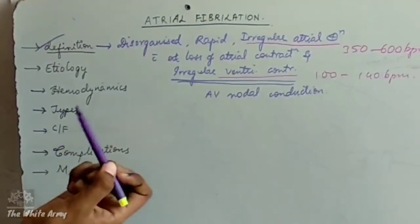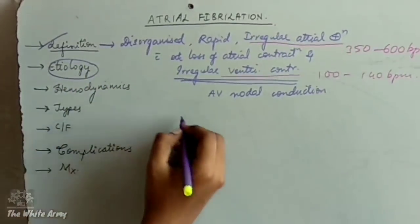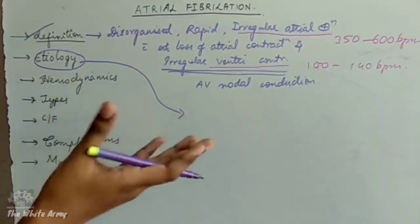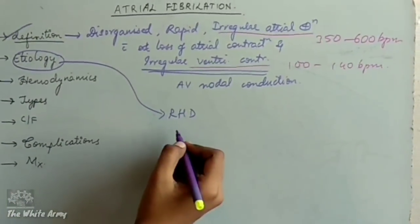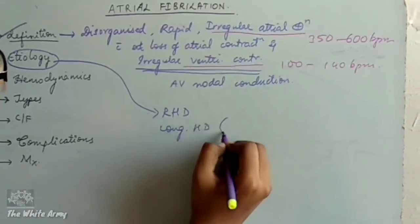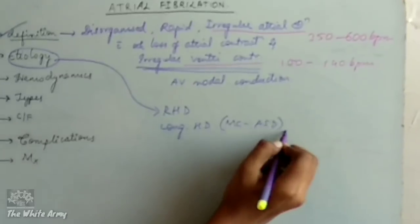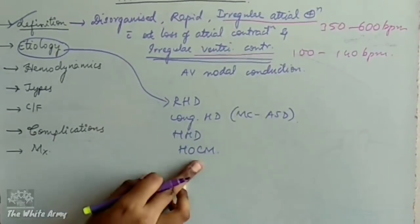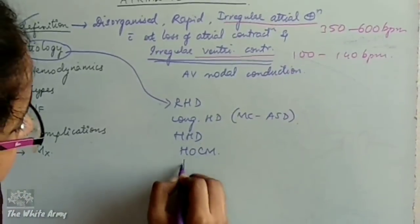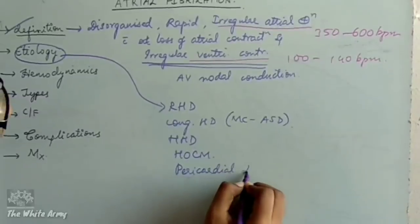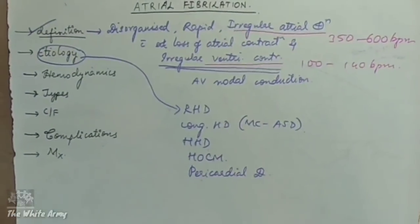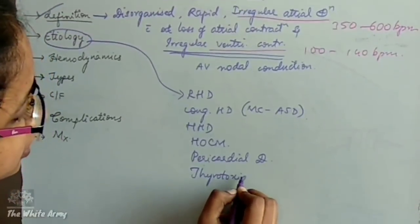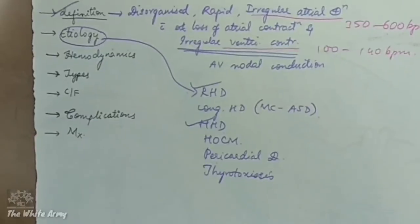When we come to the etiology of atrial fibrillation, the most common causes are RHD — that is rheumatic heart disease — and congenital heart diseases, most commonly atrial septal defect. Next is hypertensive heart disease, then HOCM — hypertrophic obstructive cardiomyopathy — and others like pericardial diseases. Another common cause is thyrotoxicosis. But the most common causes are RHD and hypertensive heart diseases.